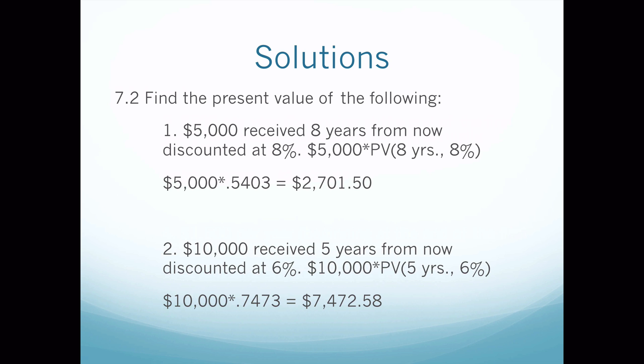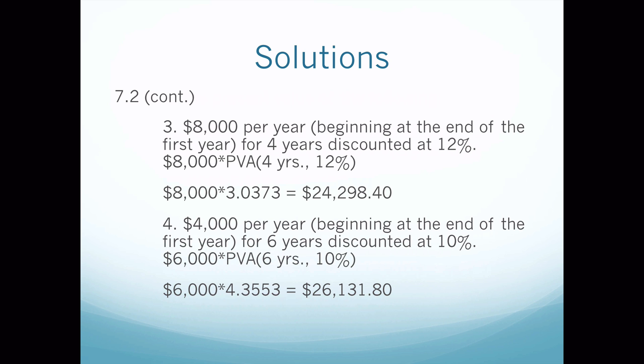Problem two is just like problem one with different numbers. We have $10,000 times PV(5 years, 6%). We go to the present value table and look at five years, go down to 6%, and get 0.7473. We do our math: $10,000 in five years is worth $7,472.58 today. Again, it's smaller than $10,000 because it was discounted — money today is worth less than money in the future.